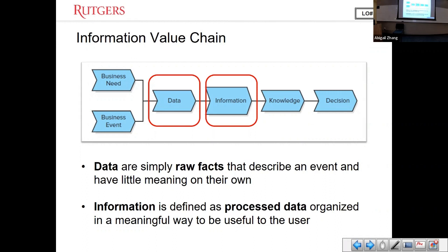That processed result might be useful for decision making, because from there we can see which store is profitable and which ones are not, and then make relevant decisions. For example, for stores that are not making ends meet, we have to consider whether the marketing effort is not enough. That's the difference between data and information.